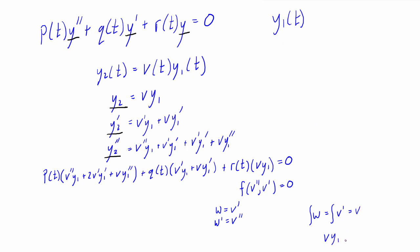We multiply v times y1, which we already knew, and that gives us y2 — the other solution to our original differential equation. If you want the general solution, you can express it as y of t equals c1 times y1 of t plus c2 times y2 of t. Join me in the next video where we'll go over an actual example using the reduction of order method, substituting in actual functions for p of t, q of t, and r of t and working through a real problem.